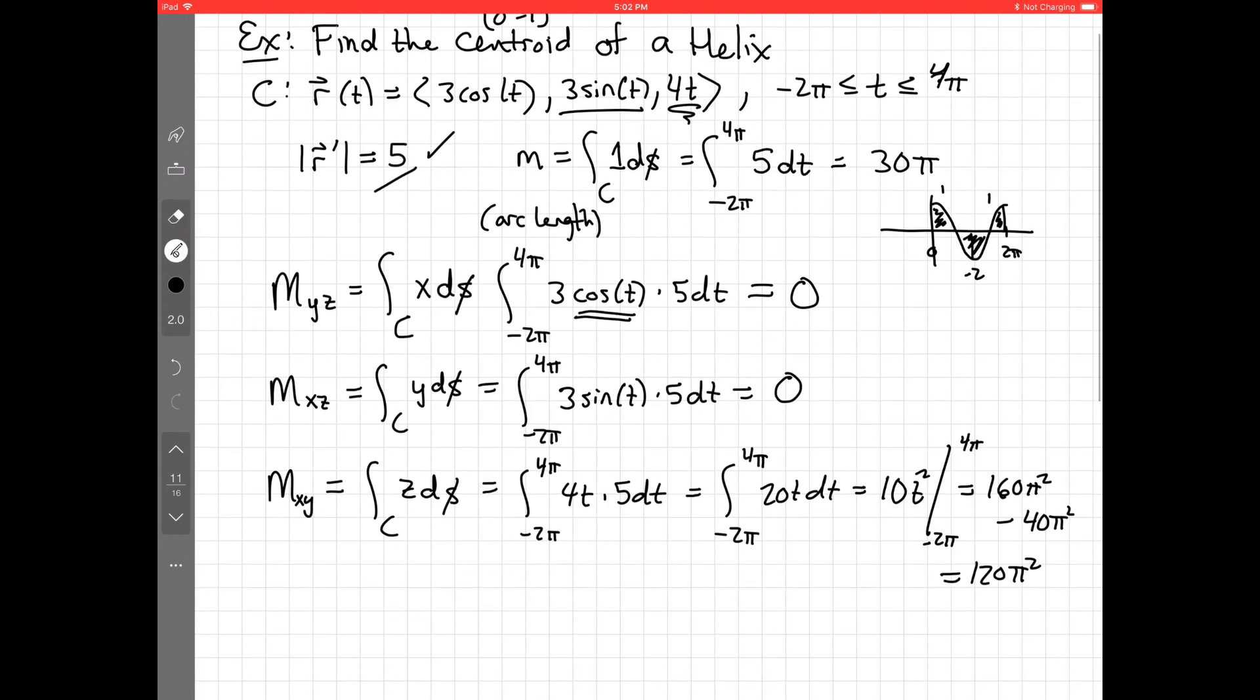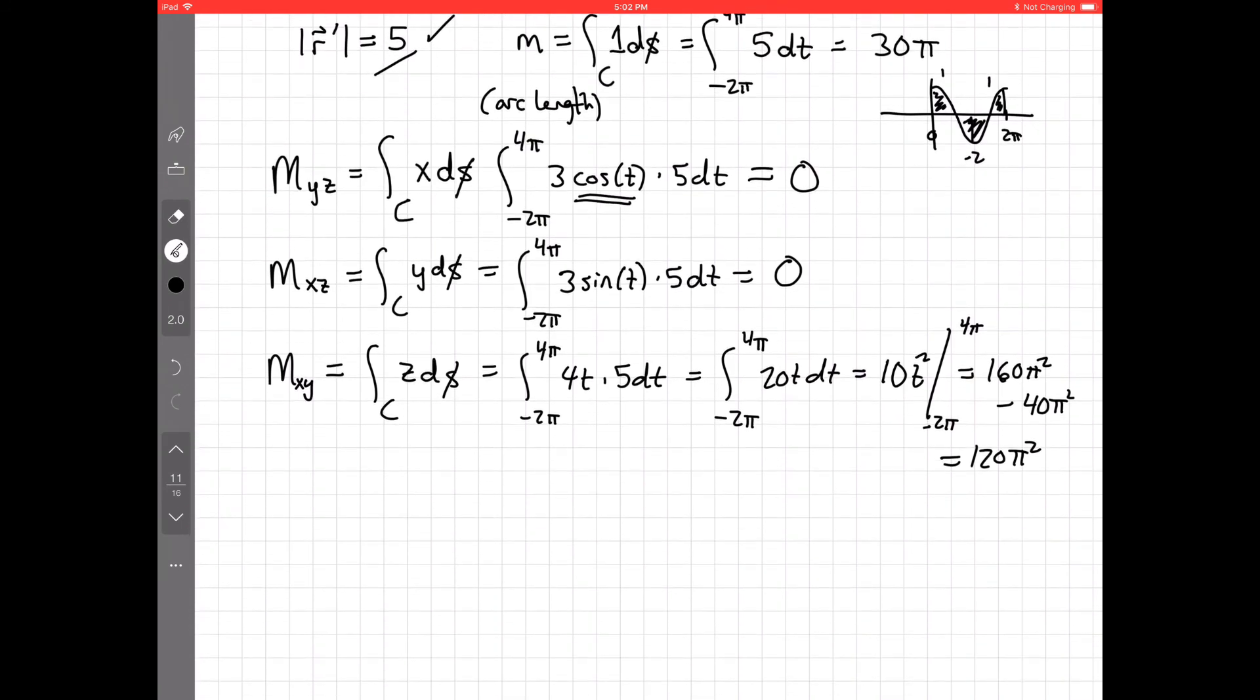All right. Now, we're ready to put everything together. And so, the center of mass, or the centroid, in this case, for the helix, is moment over mass, moment over mass, and moment over mass, which comes out to be 0, 0, and then 120 pi squared over 30 pi comes out to be 4 pi.